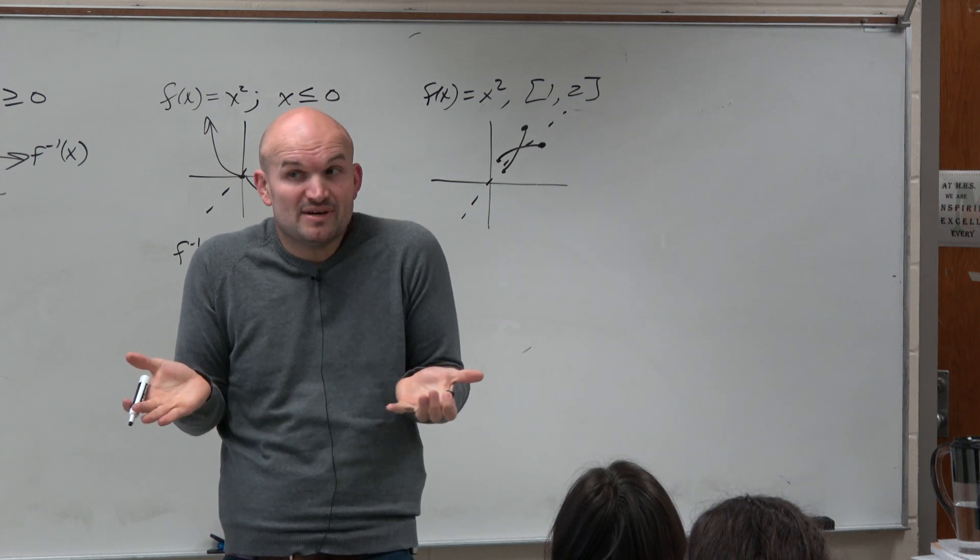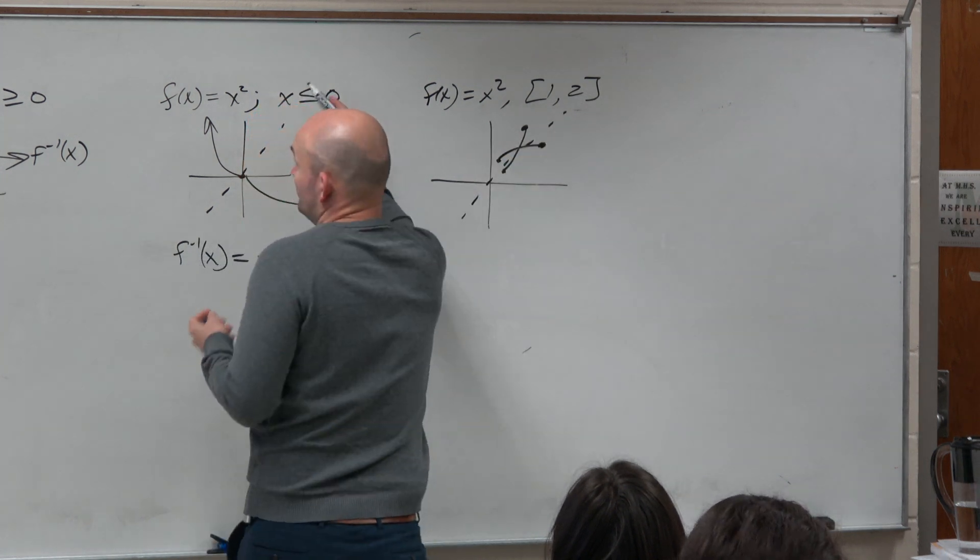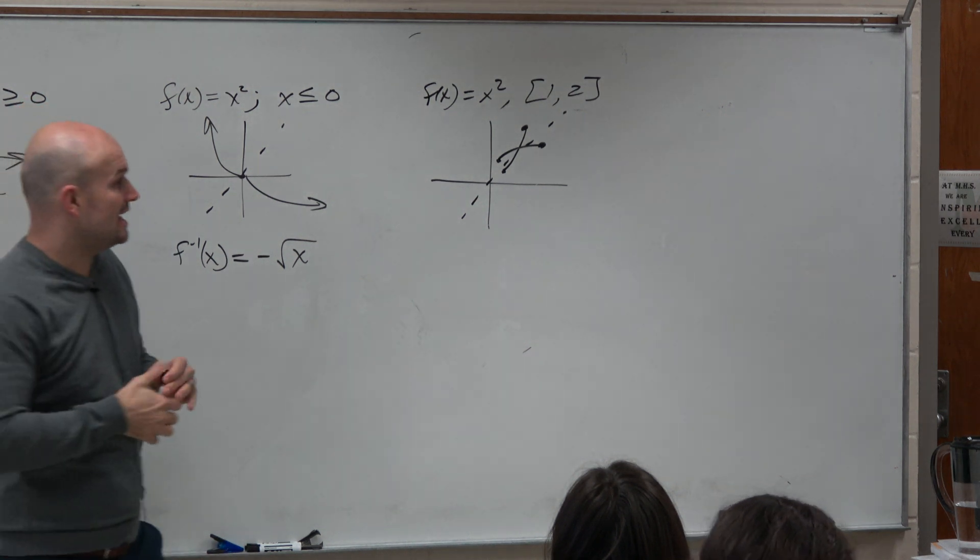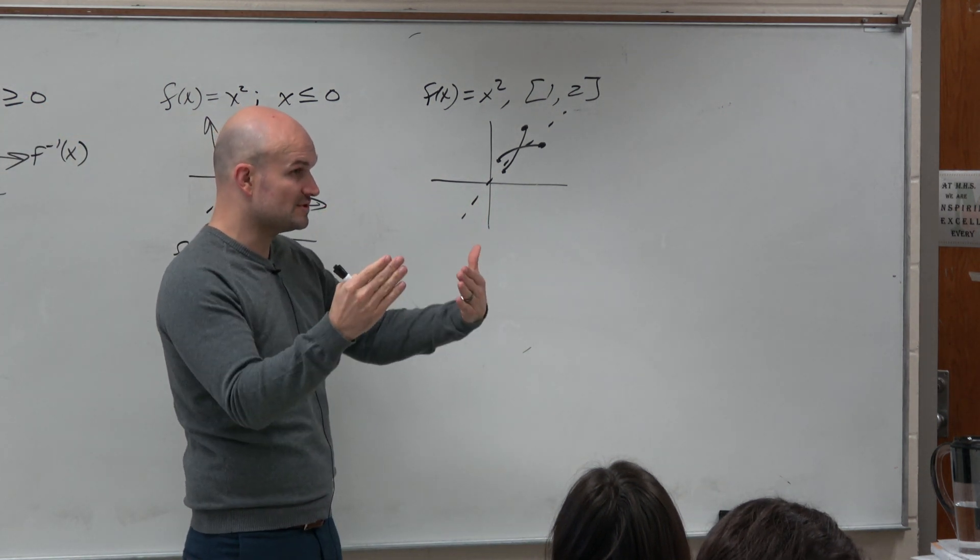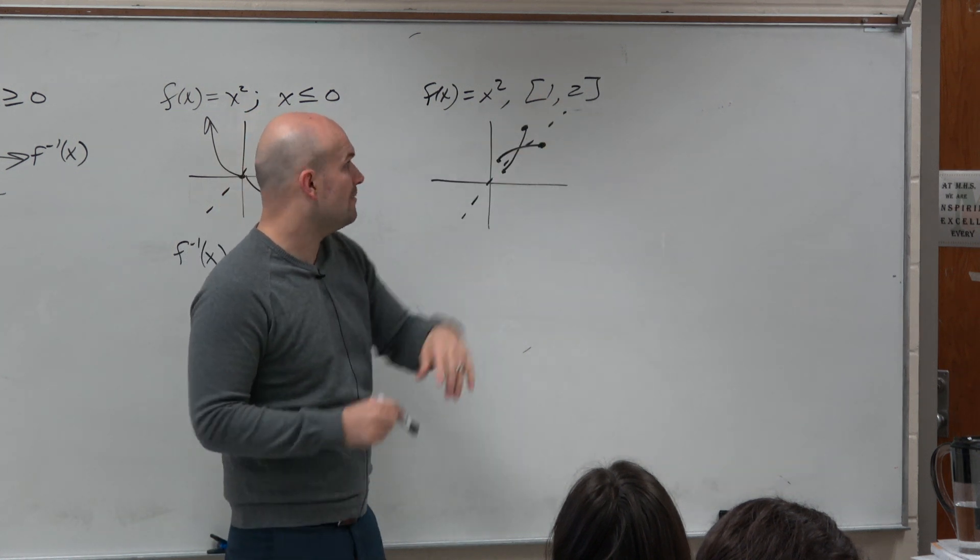So really, guys, we can pick any interval. So why are we going to choose this one, or this one, or this one? Well, as long as we restrict this domain, we are going to produce a function. This is fine, too. However, what about this function? What about if I chose this interval?